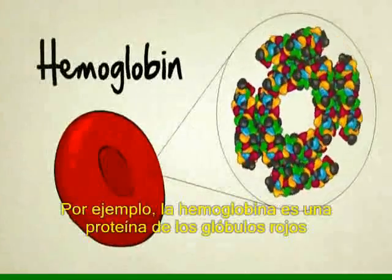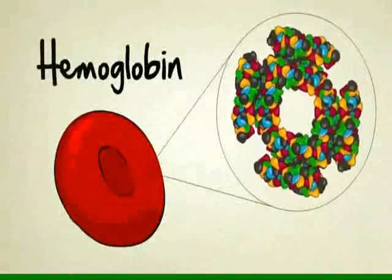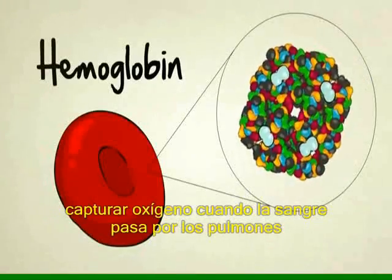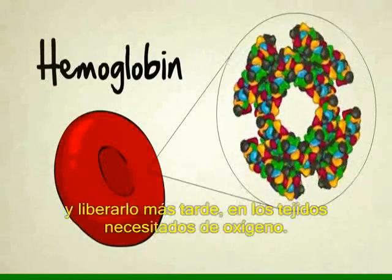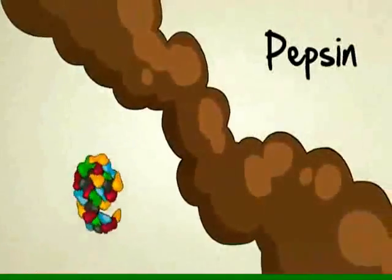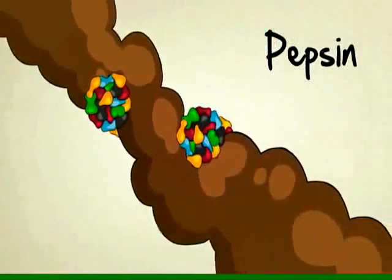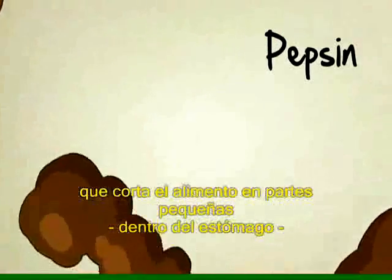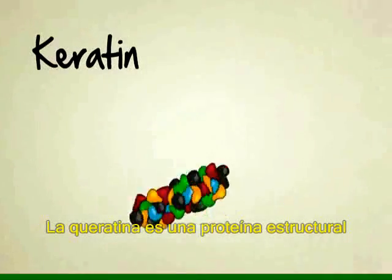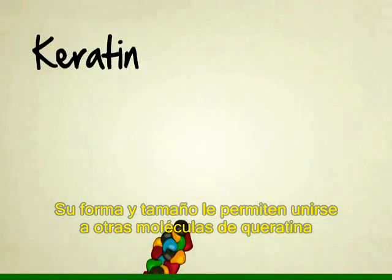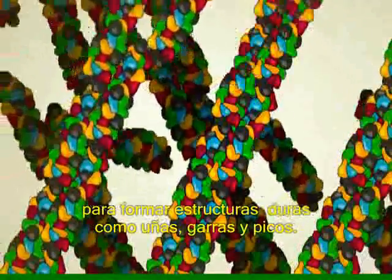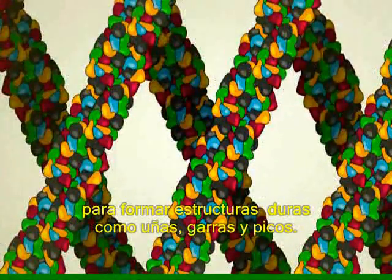Hemoglobin, for example, is a protein structure found in red blood cells. Its unique shape and size allow it to capture oxygen molecules when blood flows near the lungs, and then release it later when blood flows near oxygen-starved tissues. Pepsin is a digestive protein — it breaks down food inside your stomach so it can be absorbed by the body. Keratin is a structural protein; its unique shape and size allows it to link together with other keratin proteins to form hard structures like fingernails, claws, and beaks.